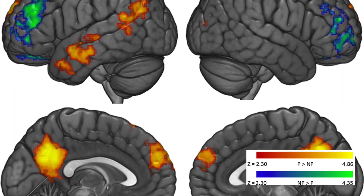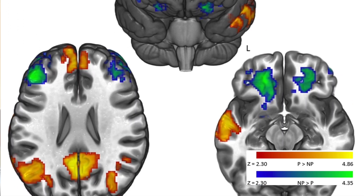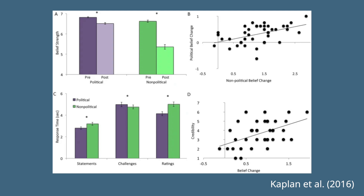An interesting 2016 study published in Nature by Kaplan et al. found increased activity in the default mode network — brain regions associated with the sense of self — when political beliefs were challenged. Those who were able to change their opinions based on counter-evidence showed less activity in their emotional centers while reading it. The more emotional we are about our beliefs, the more they become identity rather than a tool for understanding the world, and the less likely we are to update them.